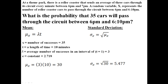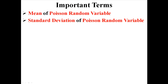For this random variable, we can expect on average 30 cars to pass through the circuit between 6 p.m. and 6:10 p.m., with a standard deviation of 5.477. And that is how you calculate the mean and the standard deviation of a Poisson random variable.